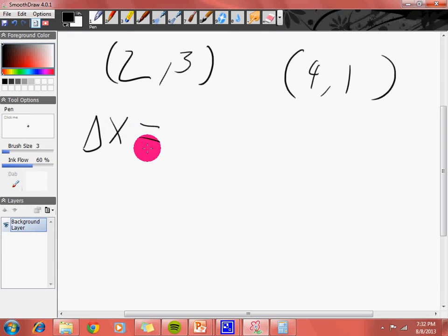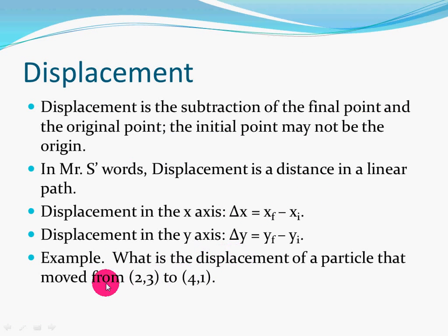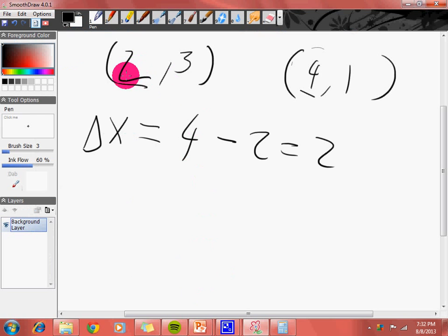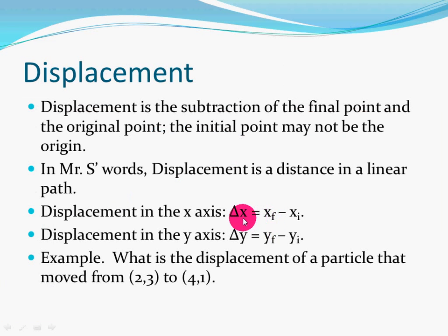Delta x, the change in the x-coordinate, which is represented by these two numbers, is the final minus the initial. How do I know that 4 is the final and 2 is the initial? Over here in wording, we're saying that the particle moved from this initial point (2,3) to this final point (4,1). So this is the initial point, that's the final point. And then for the y-axis, same thing pretty much. You can pause it and figure it out yourself, but you would have probably gotten 1 minus 3, which is negative 2. I did not attach any units here, so you don't need any units here.